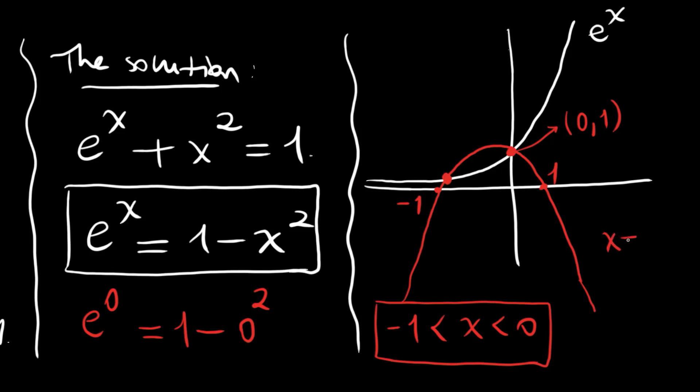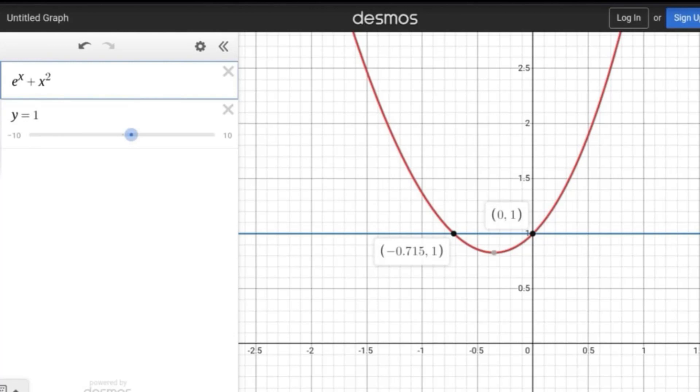The second root is between -1 and 0, and the first one we have found was x = 0. Now I will show you the graphs from the Desmos calculator. This is our graph. The red graph is e^x + x^2 and the other one is y = 1. The intersection points as you have seen here are (0, 1) and some negative -0.715, 1 again.